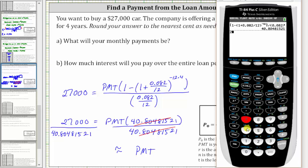Going back to the calculator, we have 27,000 divided by 40.80481521 and enter. To the nearest cent, or two decimal places, the monthly payment will be $661.69.